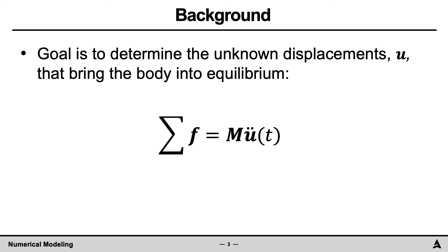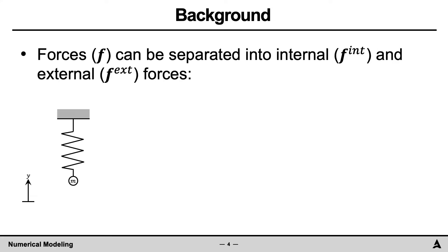In the simplest form, the objective is to find the solution to the equilibrium equation, which is the sum of the forces equal to the mass times acceleration, where U double dot is simply the second derivative of displacement U with respect to T. The force F can be separated into internal and external forces.